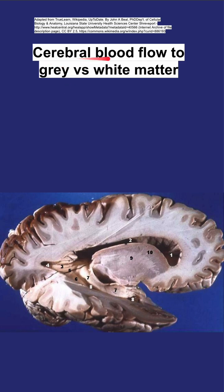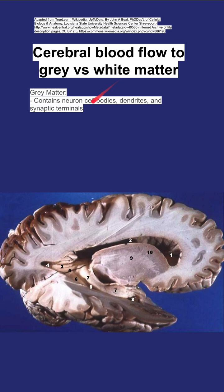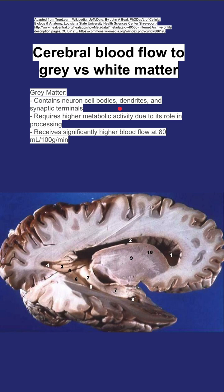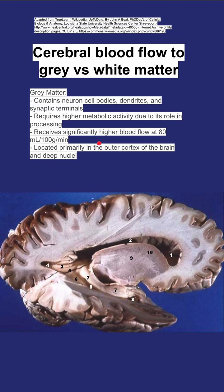Here are some notes on cerebral blood flow to the gray versus white matter in the brain. The gray matter contains neuron cell bodies, dendrites, and synaptic terminals, and it requires higher metabolic activity due to its role in processing information. It receives significantly higher blood flow per gram of tissue — at 80 cc's per 100 grams per minute — which is significantly higher than the white matter.